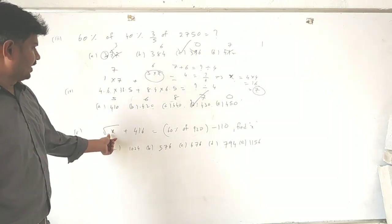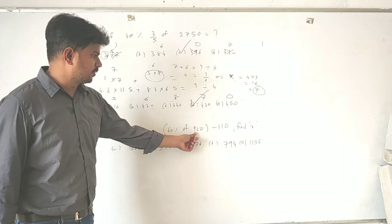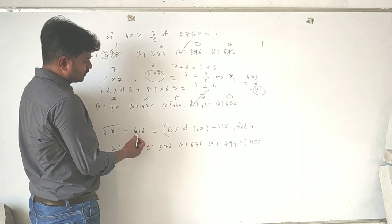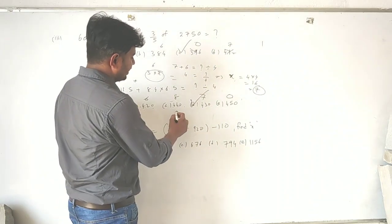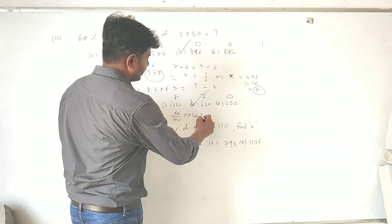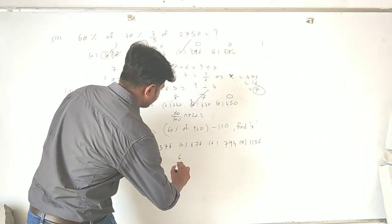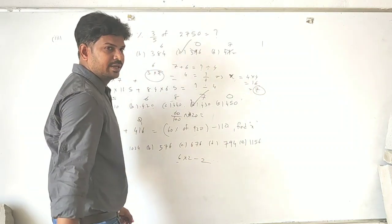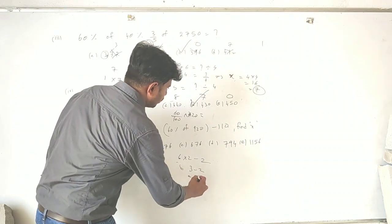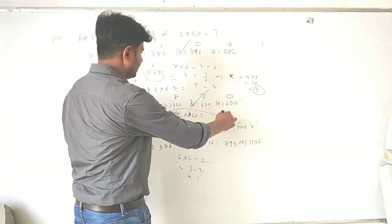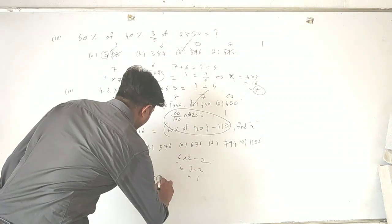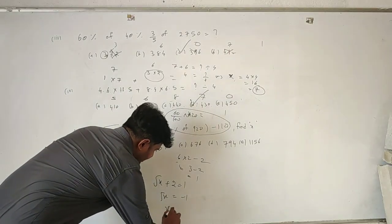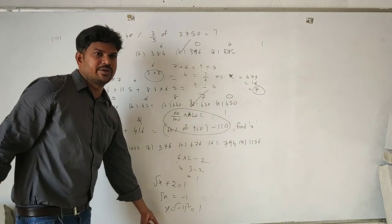Let's apply digital sum to find the square root: √(X + 416) = 60% of 92210. You need to find X. The digital sum of (X + 416): 6 plus 4 is 10, plus 1 gives 11, which is 2. For 60% of 92210: rewrite as 60/100 times 92210. Calculate digital sums: 6 times 9, and 9 times 9, gives 2 minus 1 minus 1 minus 0, whose digital sum is 2. So √(digital sum of X + 2) = 1. Squaring both sides: X equals (1 minus 2) squared equals 1. So X equals 1.